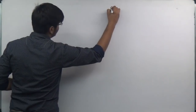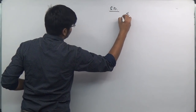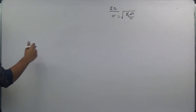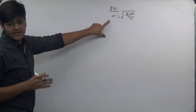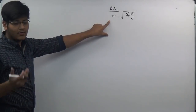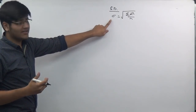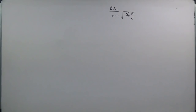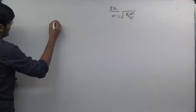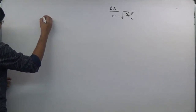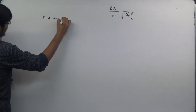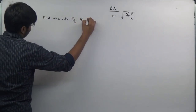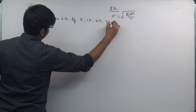We'll write down the formula first — whenever you are doing a statistics-based sum, teachers prefer that you write down the formula at least once, as sometimes they give step marking for this. The question is: find the standard deviation of 5, 10, 25, 30, 50.